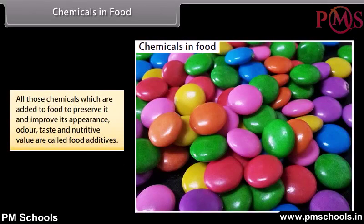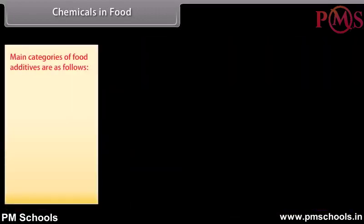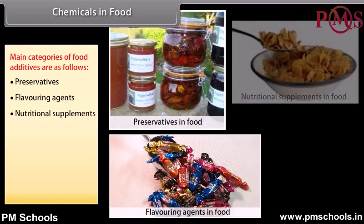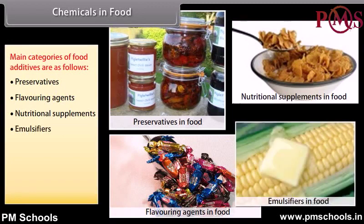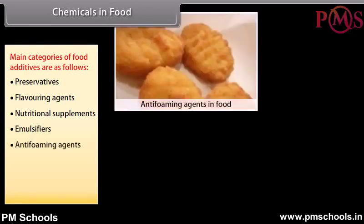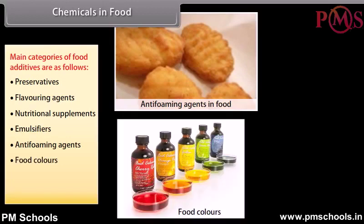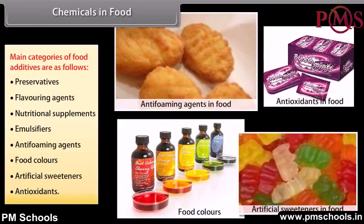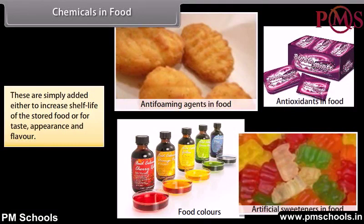Chemicals in food: All those chemicals which are added to food to preserve it and improve its appearance, odour, taste, and nutritive value are called food additives. The main categories of food additives are: preservatives, flavouring agents, nutritional supplements, emulsifiers, anti-foaming agents, food colours, artificial sweeteners, and antioxidants. These are added either to increase the shelf life of stored food or to improve taste, appearance, and flavour.